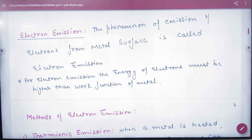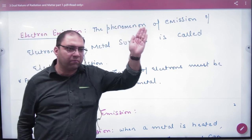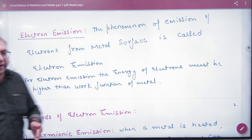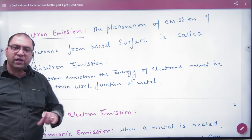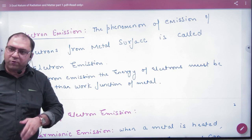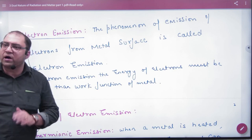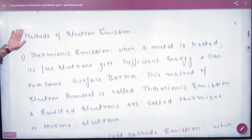Next is electron emission. We have to remove electrons from the metal surface. We call it electron emission. What should be more than work function? When you provide energy to electrons, then the electron will leave out.